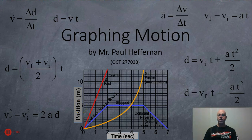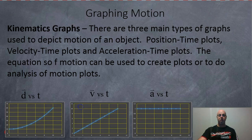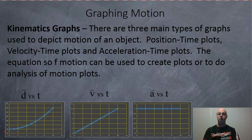Mr. Heffern here, and this is a short video on graphing motion and using the equations of motion to make graphs or to study graphs. There are three main types of graphs used to depict motion of an object: position-time plots, velocity-time plots, and acceleration-time plots. The equations of motion can be used to create plots or to do analysis of motion plots.